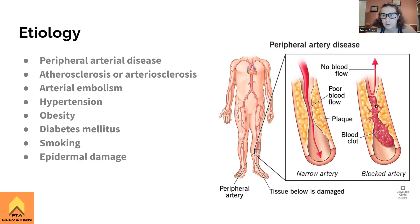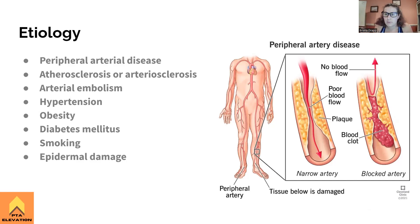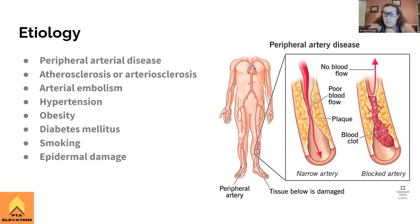Atherosclerosis can also cause arterial embolism — we can see from the picture how poor blood flow occurs in a narrowed artery and how it's completely blocked in another. When blood can't get to where it needs to go, we see cooling tissue, cool skin to the touch, and no distal pedal pulses. Atherosclerosis also causes hypertension due to the narrowing of arteries — like putting a finger over a hose, it makes blood go faster, then eventually just trickles through.